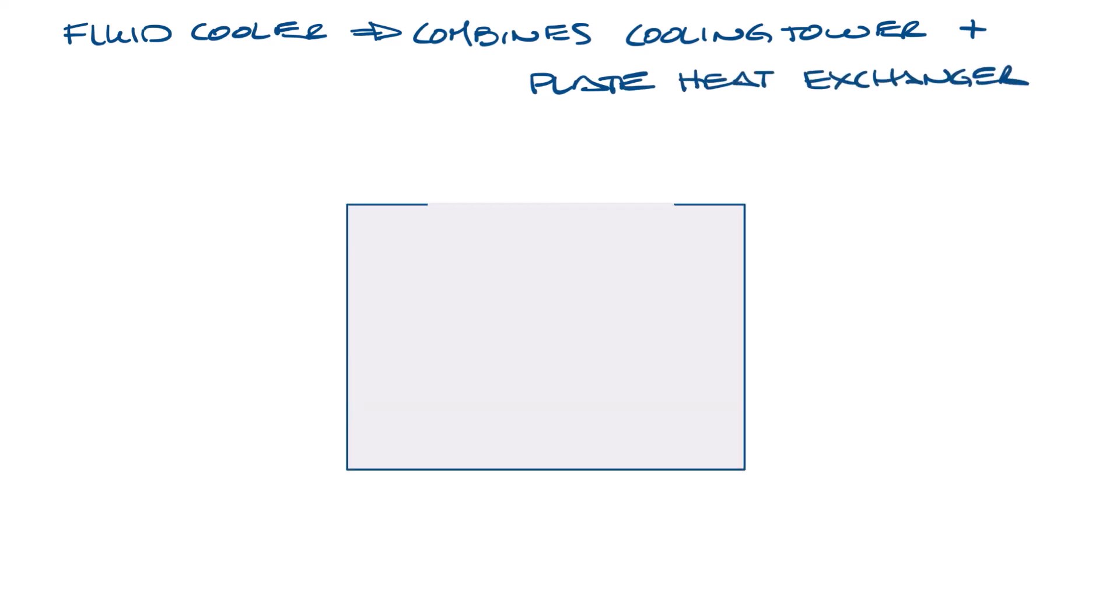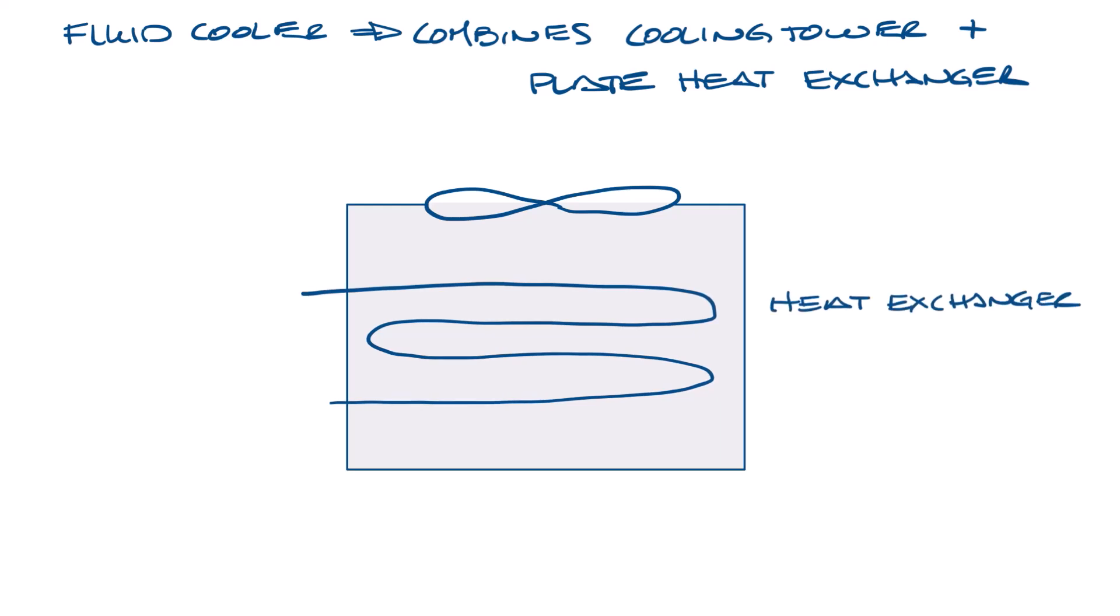Let's draw this again, but in place of fill, let's put the heat exchanger. Warm process fluid enters the cooler from your system. It might be water from a chiller or data center or from industrial equipment, but it flows through the heat exchanger coils.